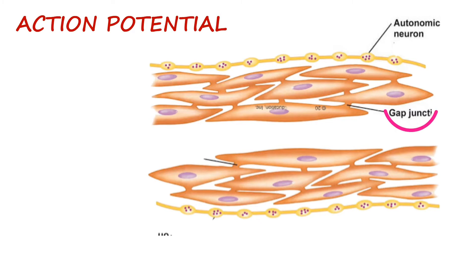There are many such bundles, and even those bundles are connected by gap junctions. This suggests that there is a branching lattice of smooth muscle bundles in each layer. Hence it works as a syncytium.